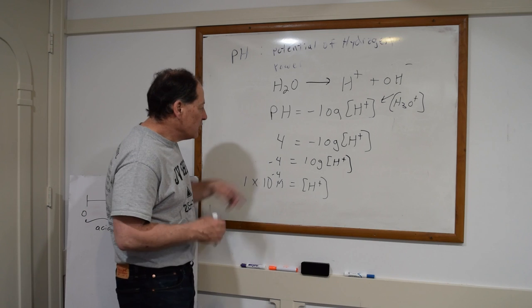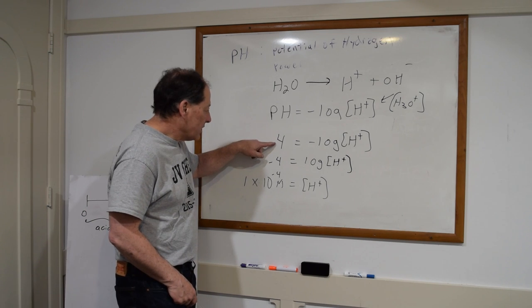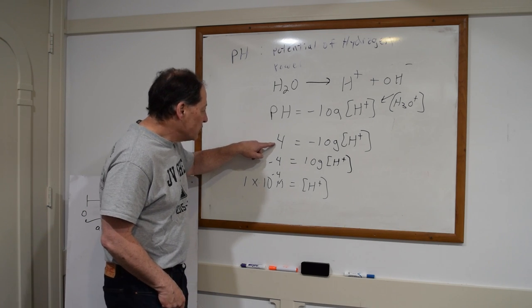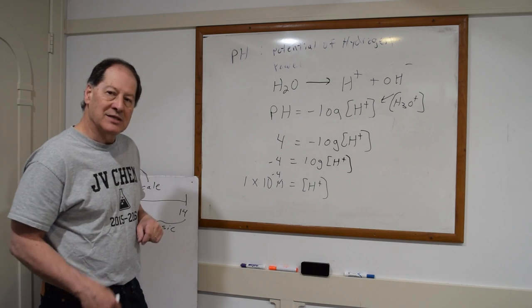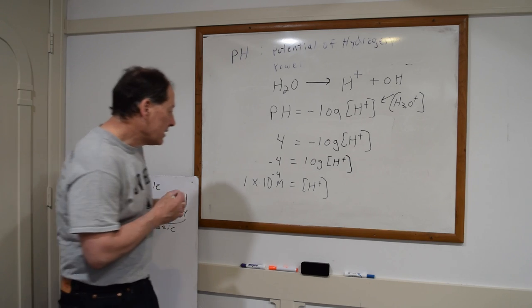So you can do that math a little bit tougher. Now it doesn't have to be whole numbers. It could be 4.7 right here. So then I'd have to do 10 to the negative 4.7 to calculate the H+. And I can't do that in my head, but calculators can do it.